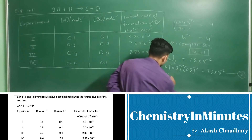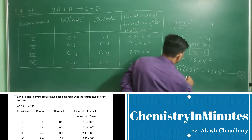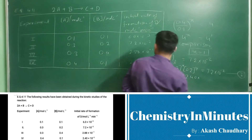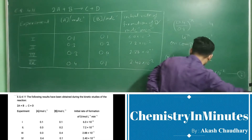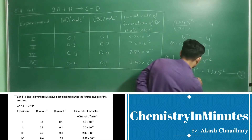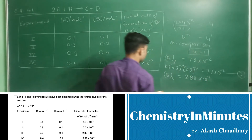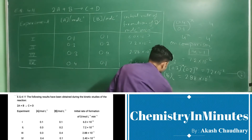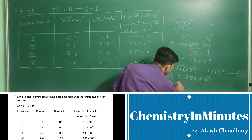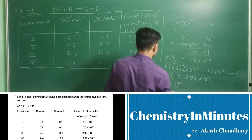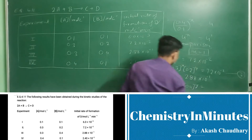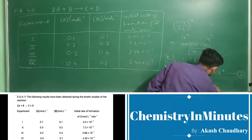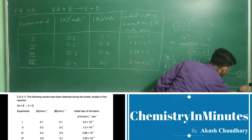For experiment 4, R₀₄ equals 2.88 × 10⁻¹. Putting the values of concentration, k(0.3)^x (0.4)^y = 2.88 × 10⁻¹. This will be equation number 4.